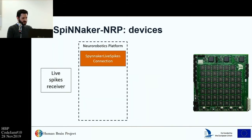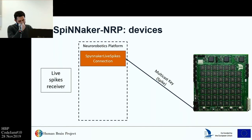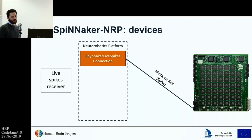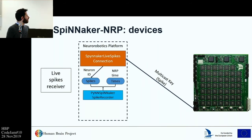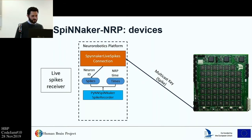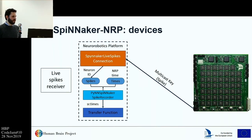On the other side, we need to receive spikes from the simulation — not all of them, due to Ethernet bandwidth limits, but we can receive spikes from some populations that we might need for another transfer function. We receive the neuron ID that has spiked and the time of spiking, but we cannot use the Spinnaker spike time because of synchronization issues. So from the spike we take only the neuron ID and pair it with the actual time of the new robotics platform — the time of the synchronization engine. If we receive the spike at a given time, for us that is the time of arrival of the spike, and we can use this information in our transfer function.